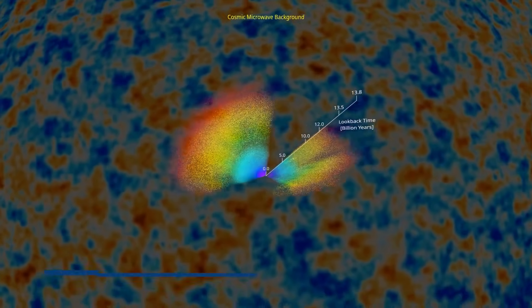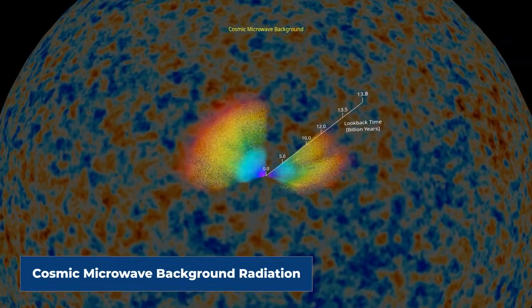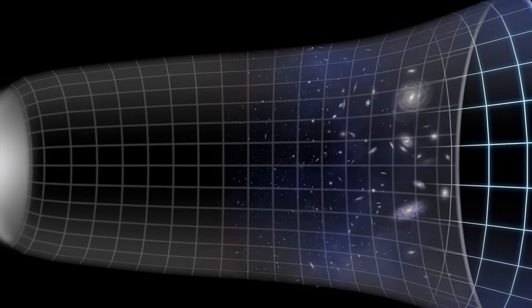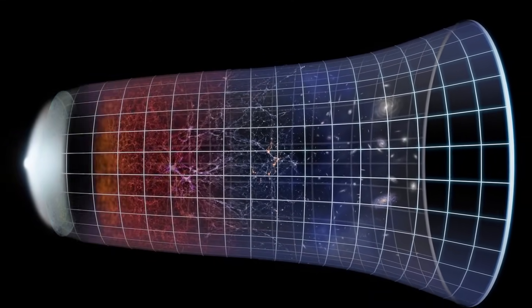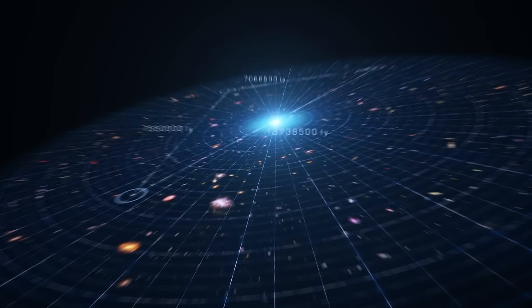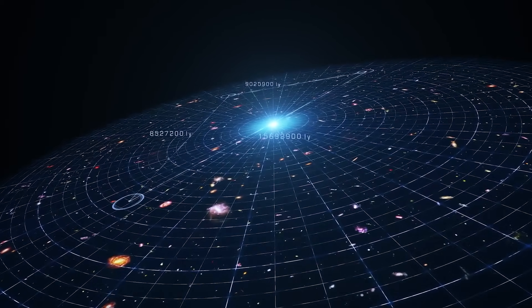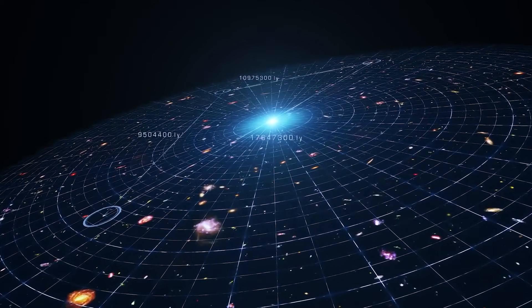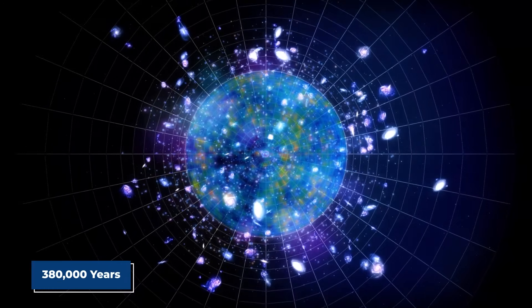For example, the cosmic microwave background radiation is a crucial piece of evidence supporting the big bang theory and our understanding of the early universe. It consists of faint microwave radiation that permeates the universe and provides a snapshot of the universe's state when it was very young, around 380,000 years after the big bang. This radiation is incredibly uniform, but scientists have detected tiny fluctuations in its temperature across the sky.